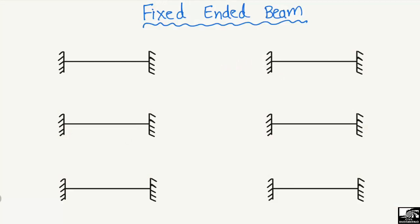Welcome back to the civil engineering YouTube channel. In today's lecture we are going to show you the moment values for the fixed-ended beam. We have a fixed-ended beam where both ends of the beam are fixed — this end is fixed and also this end is fixed. Such beams are known as fixed-ended beams, and we will show what the moment values are at these fixed points for beams with different loading conditions.